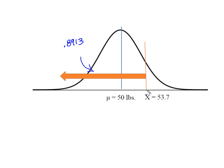But what we wanted was from here up. Remember the characteristic of the normal curve is that the total area under the curve is equal to 1. So we know that the area below 53.7, the area above 53.7 is going to equal 1. So I'm simply going to take 1 minus my 0.8913. And that's going to give me an area up here in the tail of the curve of 0.1087.